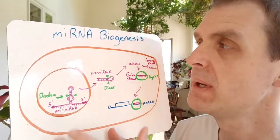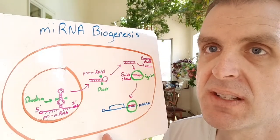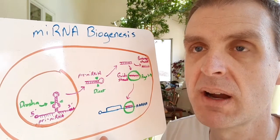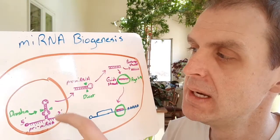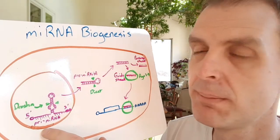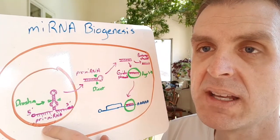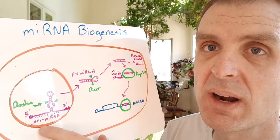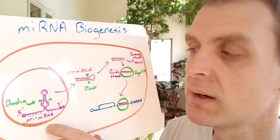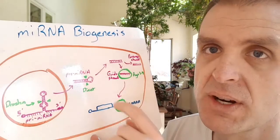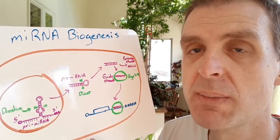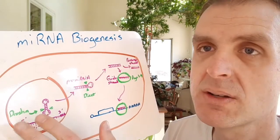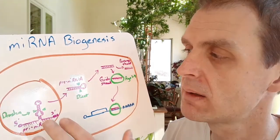Here we have microRNA biogenesis. Biogenesis is just our fancy scientific way of saying microRNA processing. In the nucleus, primary microRNAs are transcribed almost always by polymerase 2, sometimes polymerase 3. Polymerase 2 is typically the one that gives you a regular old mRNA.